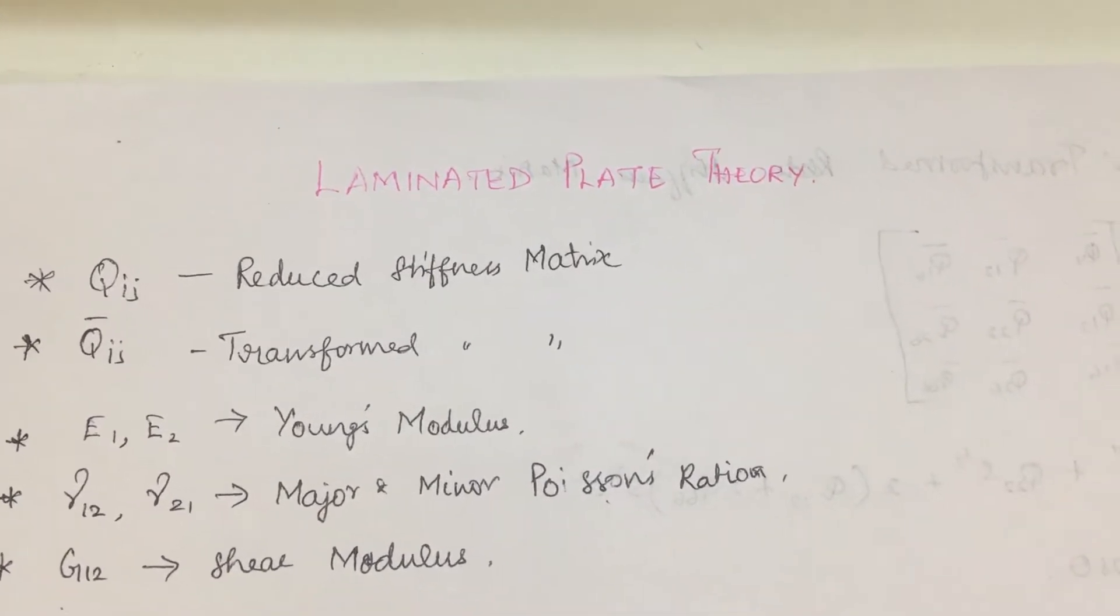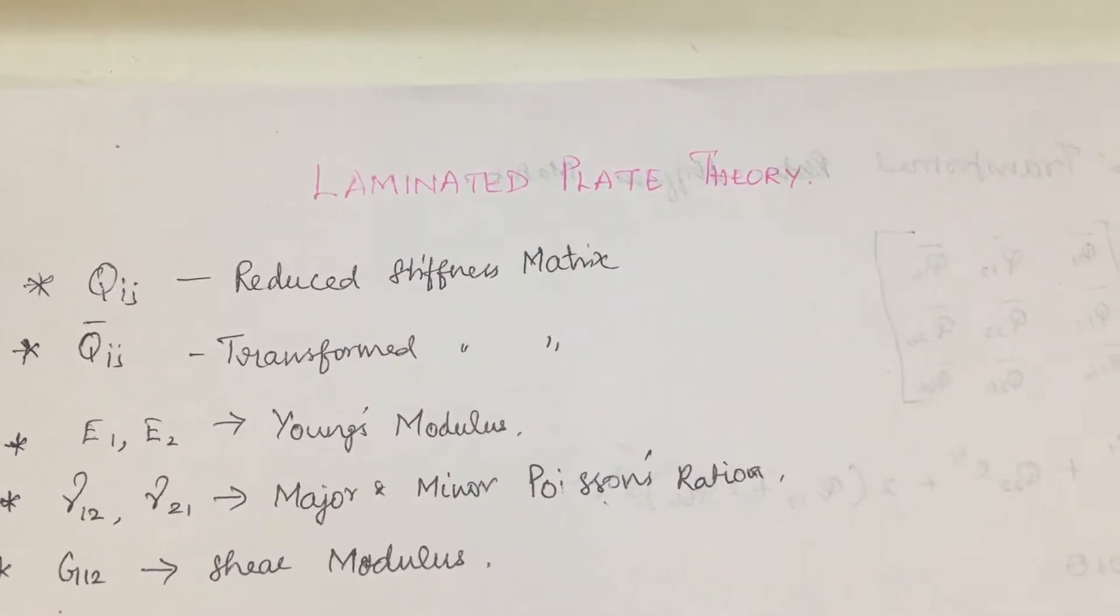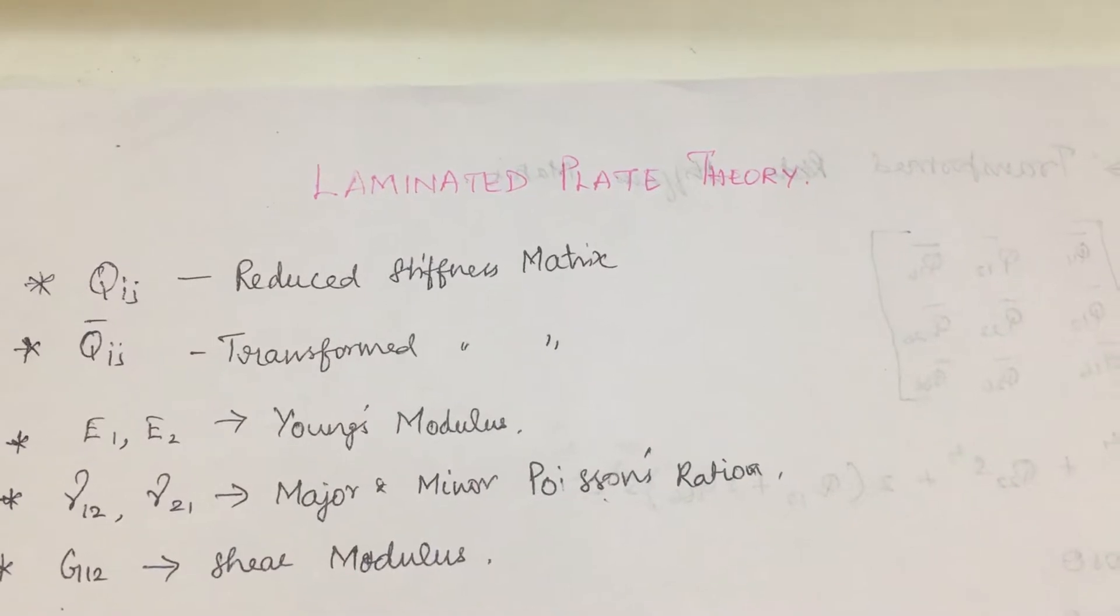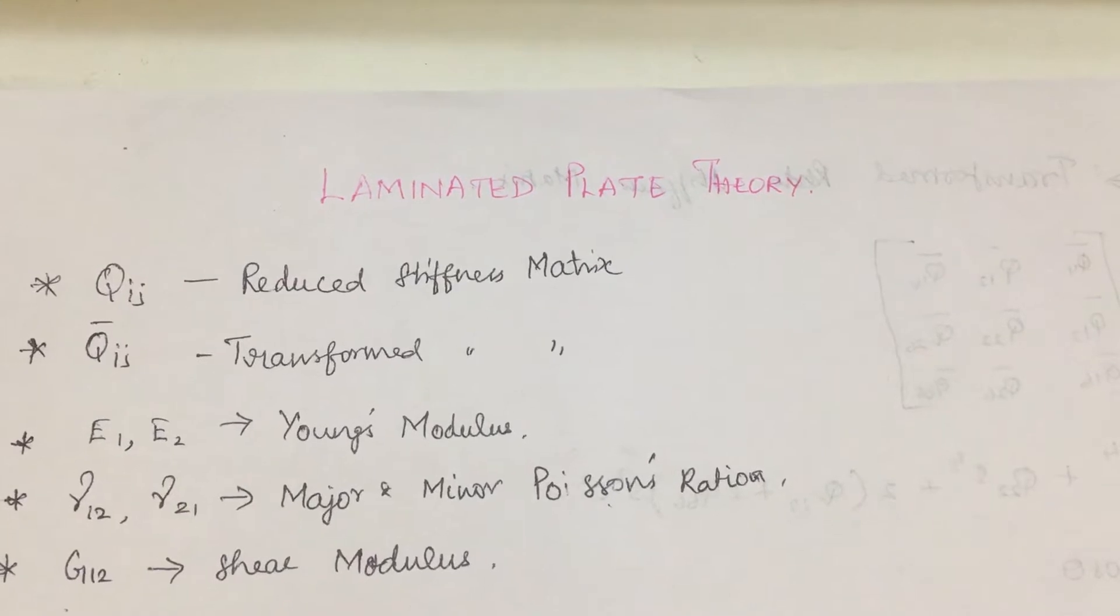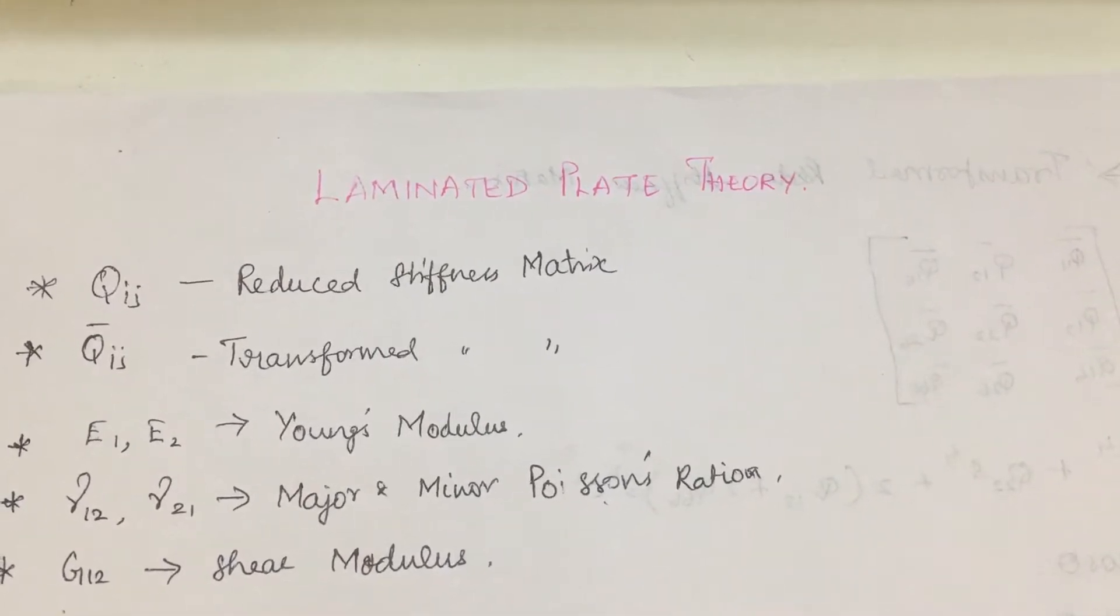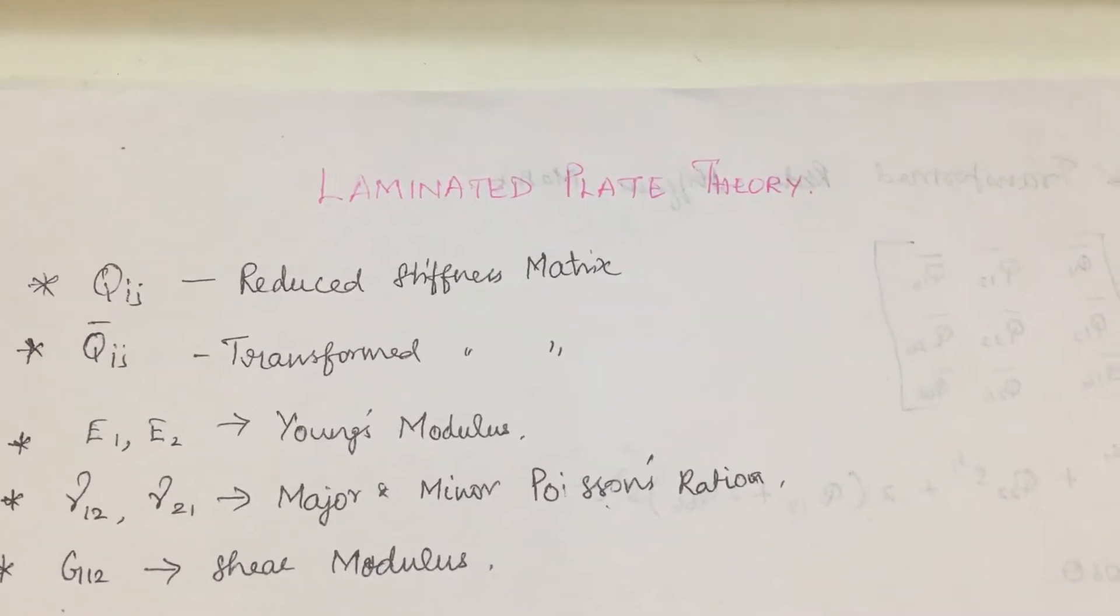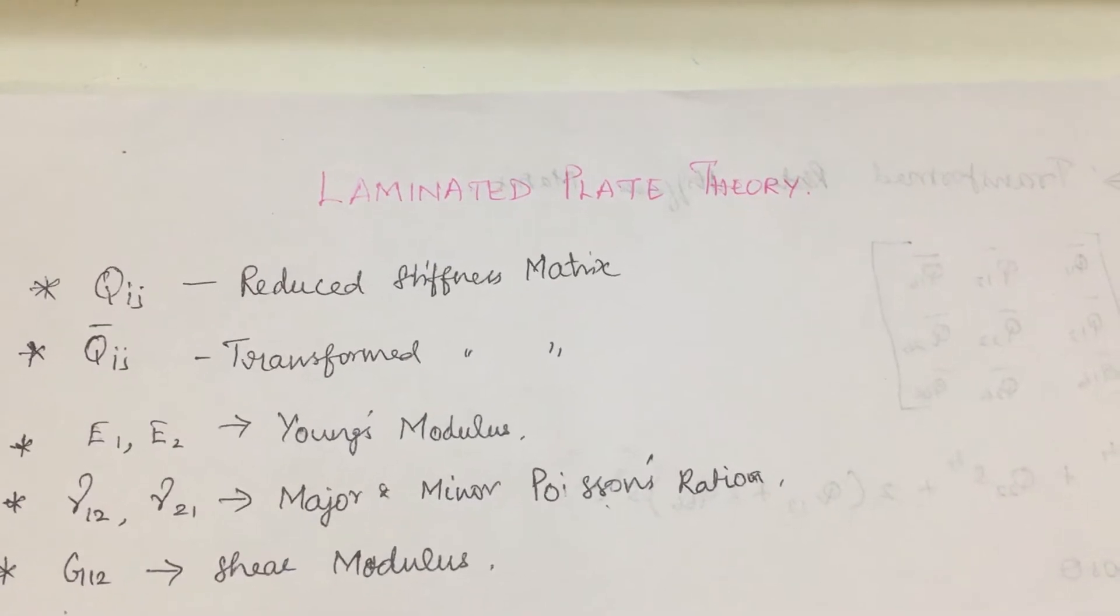Second one, qij bar, the transformed stiffness matrix. E1 and E2 stand for Young's modulus in longitudinal and transverse directions.